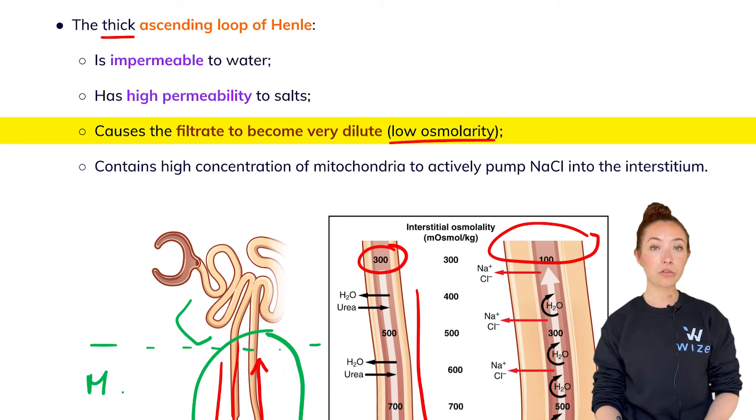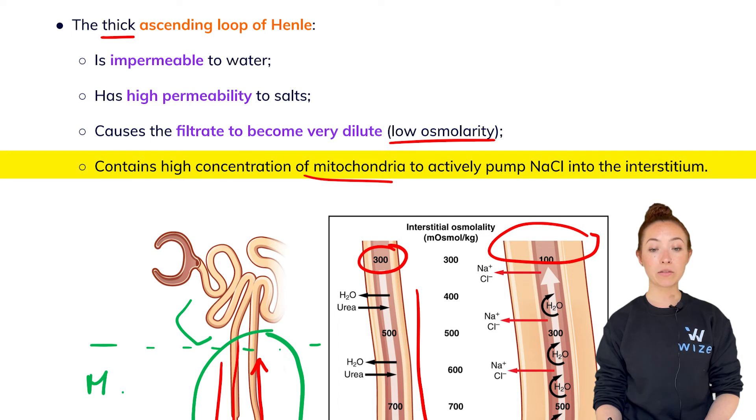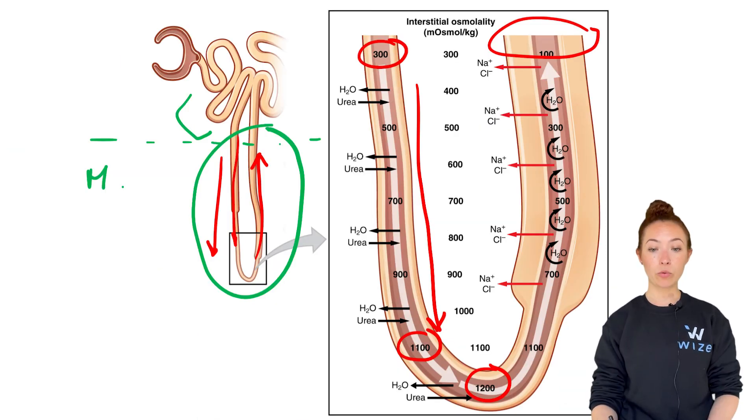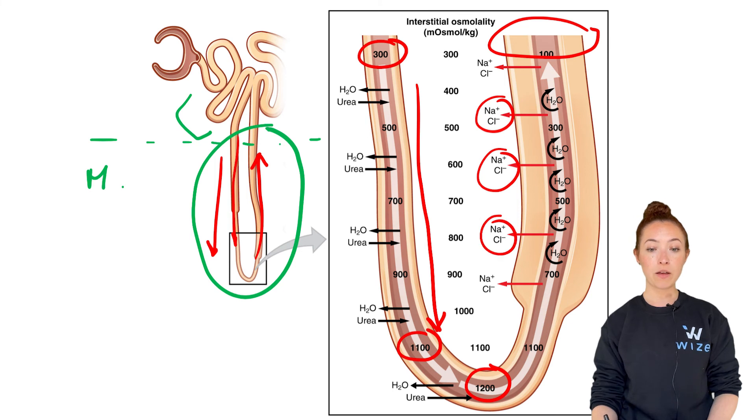The thick ascending loop of Henle has a high concentration of mitochondria to actively pump sodium chloride into the interstitium, so it reabsorbs a lot of sodium chloride. This is what we're seeing here: a bunch of sodium chloride is getting reabsorbed, the water is not able to be reabsorbed so it stays here.